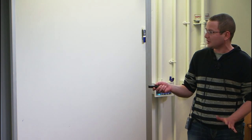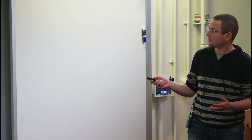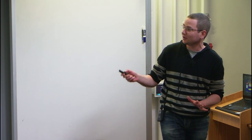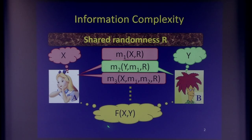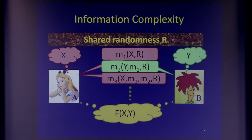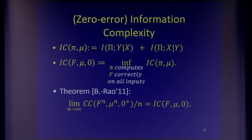The basic setup is one you've seen many times. We have Alice and Bob, they have shared randomness, and they're doing something with the protocol. In this case, they're computing. It matters that they're trying to compute some function f of x, y, which means that both of them, in the end, have the value of f of x, y.